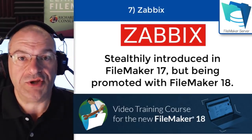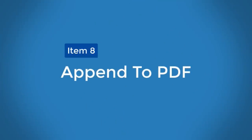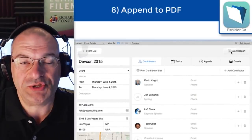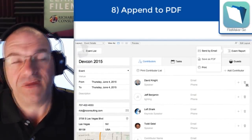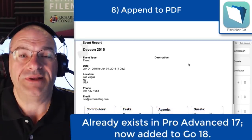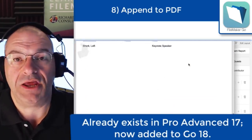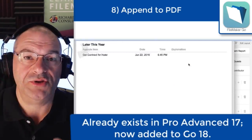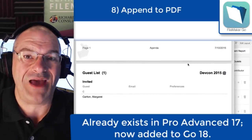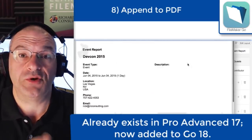The next item on our list is append to PDF — the idea of having a PDF and adding additional pages to it via script in FileMaker. This is a feature that already exists in Pro, but it was missing in Go. Using append to PDF is now a supported script command in FileMaker Go, which is great.